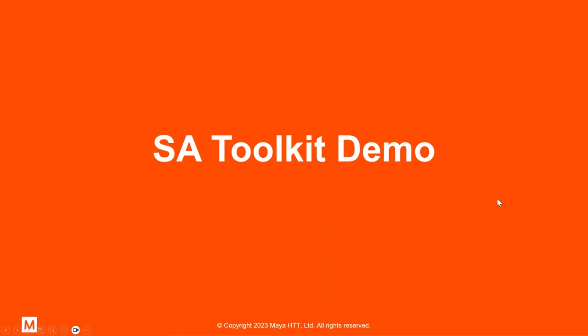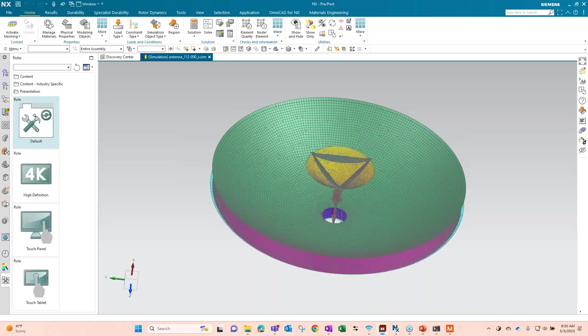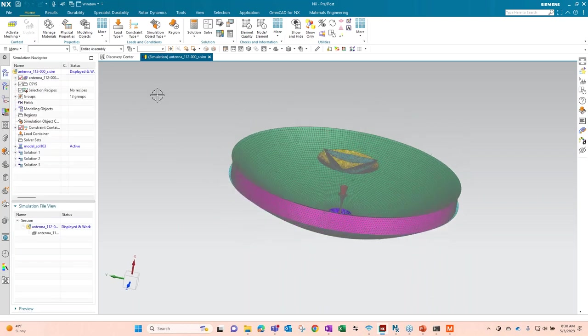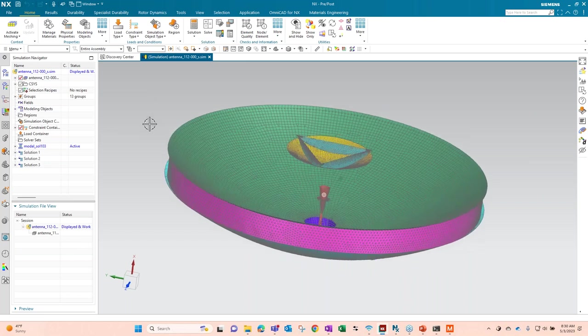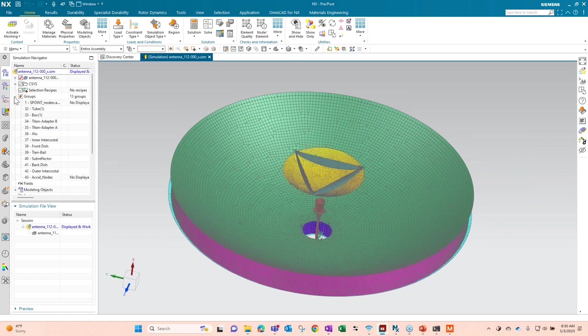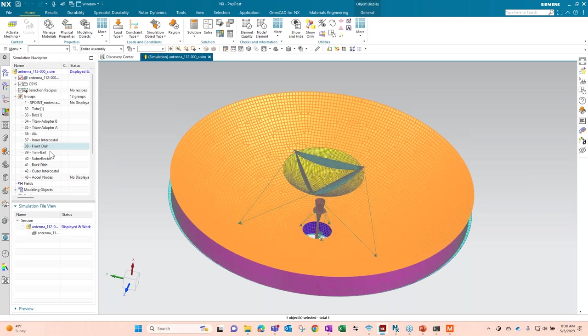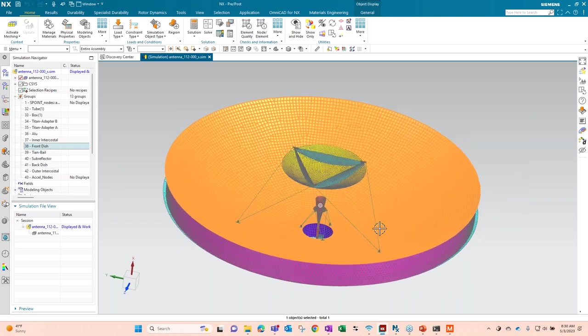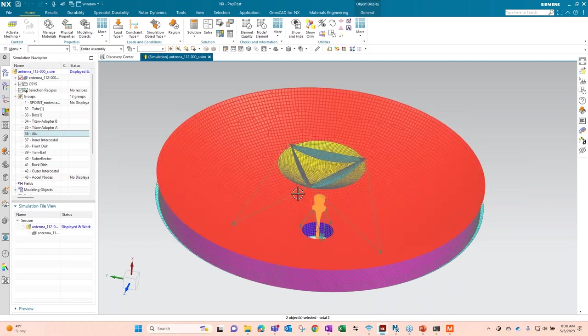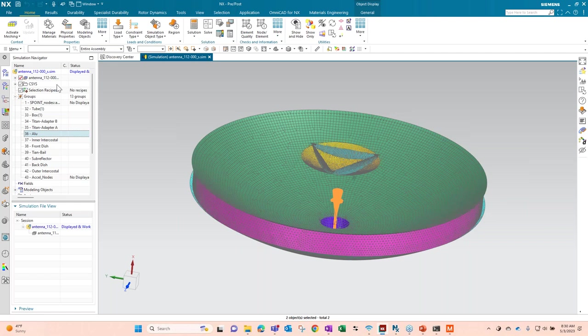So let's go ahead and do a demo, shall we? If I pull up NX, you can see here I have a model. This is just a model, dummy model we created of an antenna. It's actually primarily a composite. I've created some groups in here. So you have the front dish, the main components are composite. You have an aluminum horn here in the middle and just some 1D elements in there as well.